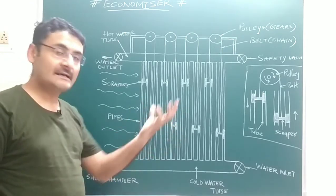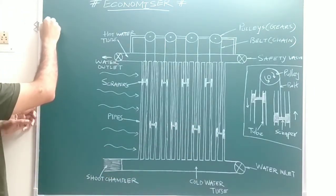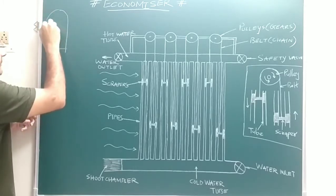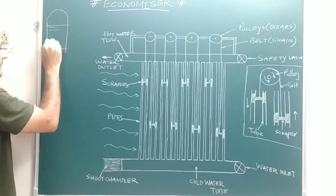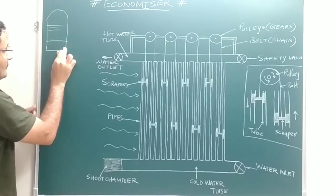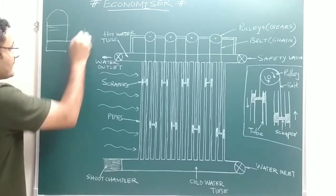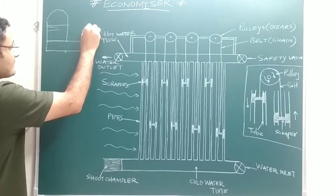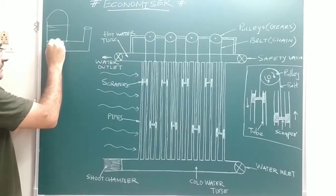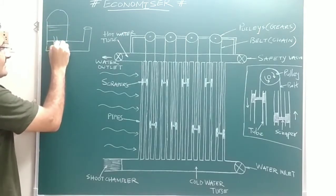The answer is that this economizer is located in between the boiler and the chimney. To give an example: suppose this is your boiler where water is present, and this is your furnace where combustion of the fuel takes place. That furnace is connected with the chimney.